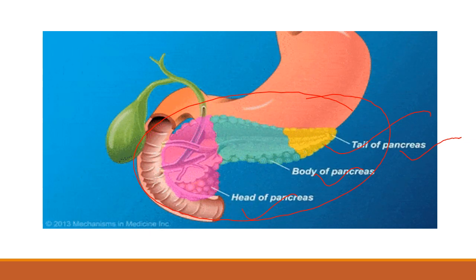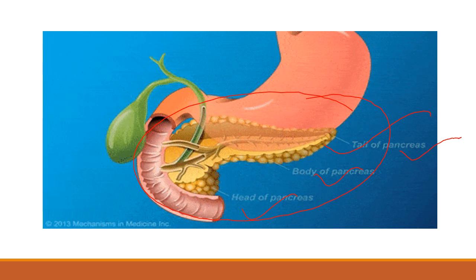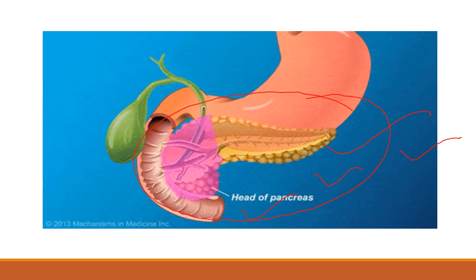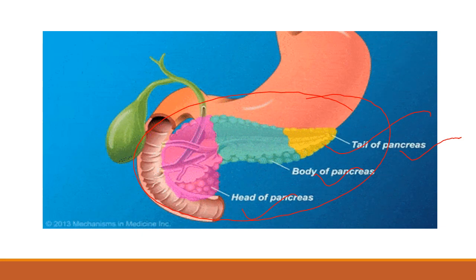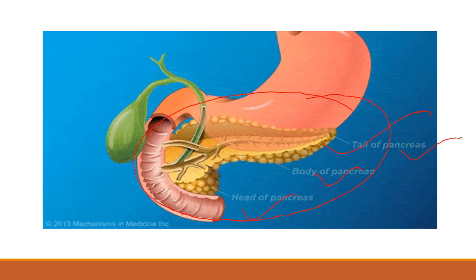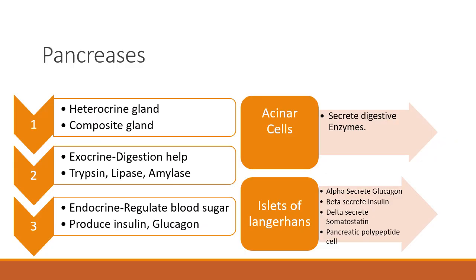Here you can see this pancreas — it has a somewhat leaf-like or fish shape. The pancreas has two main functions, and it behaves like a heterocrine gland or composite gland, meaning it will behave like both an exocrine as well as an endocrine gland.